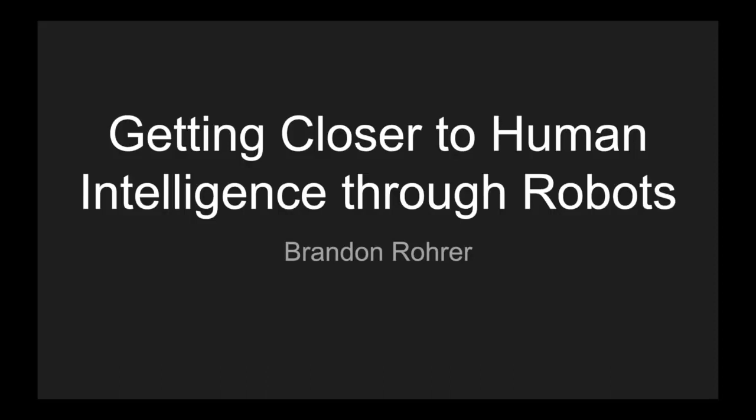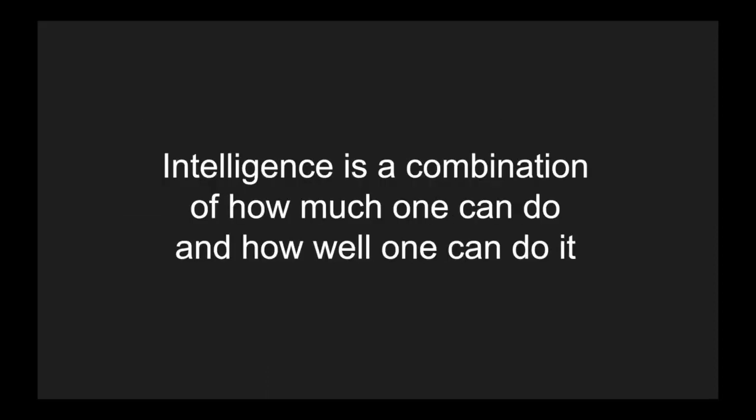Throughout this presentation, we'll be talking about intelligence. The working definition that I propose is that it's a combination of how much one can do and how well one can do it. Notionally, you could be extremely good at only one thing and not be that intelligent. Also, you could do many things, but do them all very poorly, and also not be that intelligent. Intelligence is the combination of being able to do many things and to do them well.